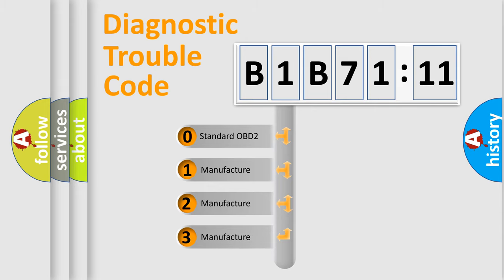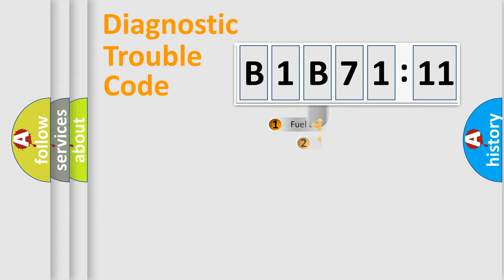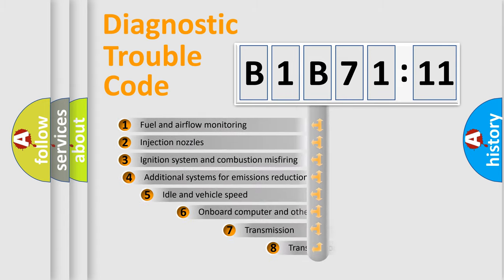If the second character is expressed as zero, it is a standardized error. In the case of numbers 1, 2, or 3, it is a manufacturer-specific error.